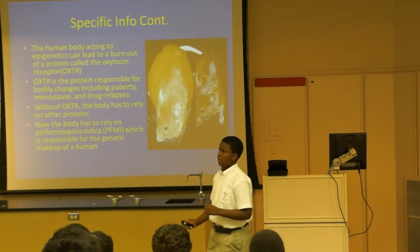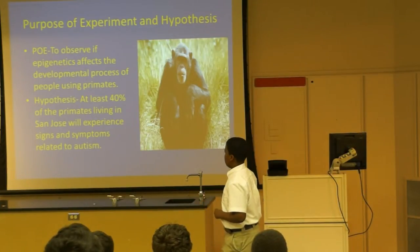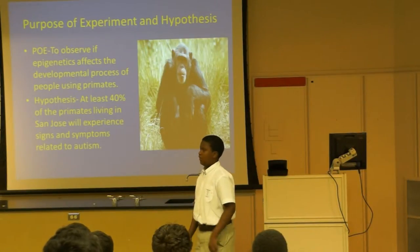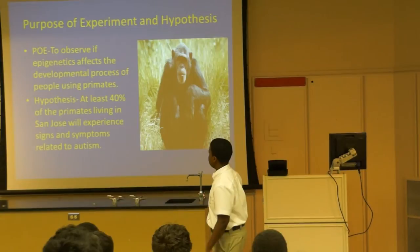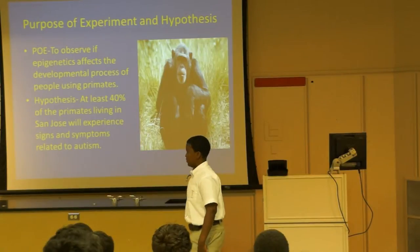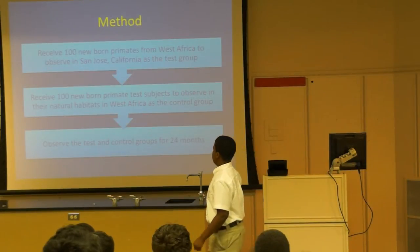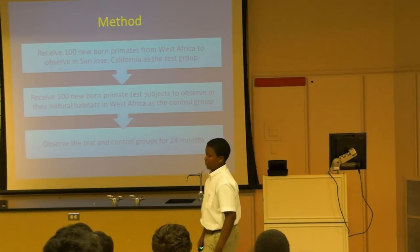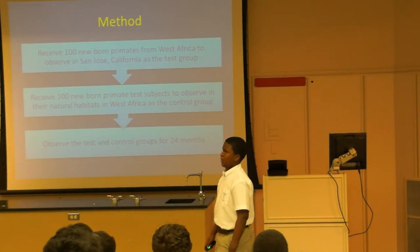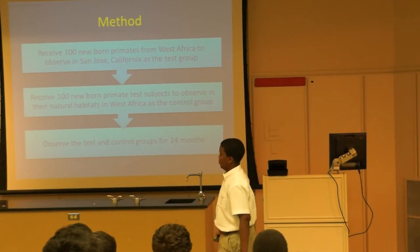In the research design, the purpose of the experiment is to observe how epigenetics affects the development process using primates. The hypothesis is that at least 40% of primates living in San Jose, California will experience signs and symptoms of autism. The method involved receiving 100 newborn primates from West Africa to observe in San Jose, California, and using another 100 primates as a healthy control group, with observational tests conducted at 24 hours.